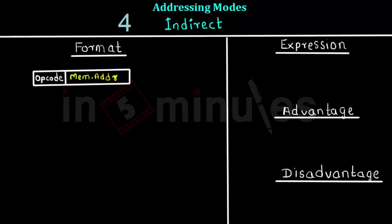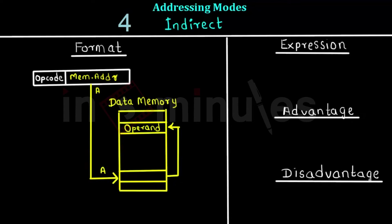It is the address of the location at which the address for the operand is stored. The execution will make it very clear. This is the data memory, and the memory address given in the operand field is not the actual address of the operand — it is used to access a certain location where the address is present.